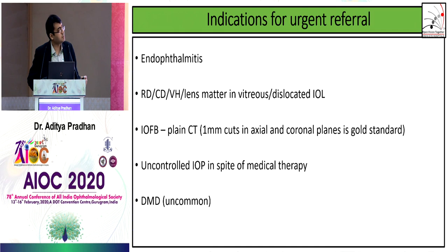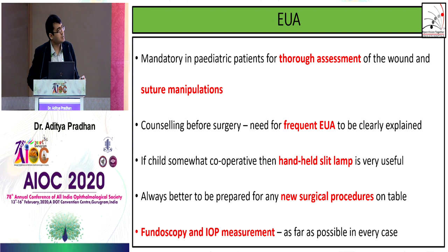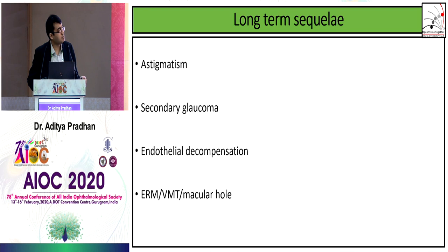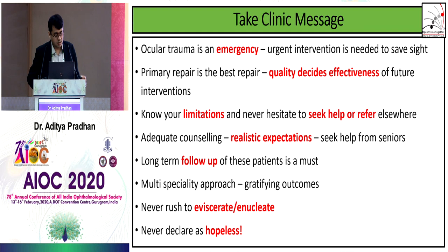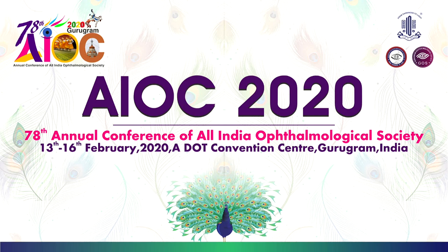Refer to colleagues for IOFB, posterior segment pathologies, and endophthalmitis. EUA is mandatory in all pediatric patients — you may need to resuture or adjust suture tension. Explain to parents that the child will need repeated anesthesia. Long-term complications include astigmatism, glaucoma, or posterior segment pathologies. Visual rehabilitation may involve contact lenses, spectacles, or low vision aids. Optic atrophy may occur. Essentially, this is an emergency — save the eye with urgent intervention. Quality of your repair determines future interventions. Seek senior help, keep realistic expectations, and mandate long-term follow-up.